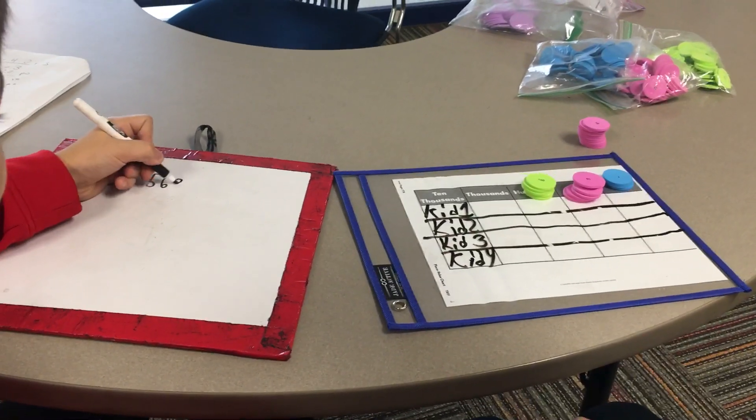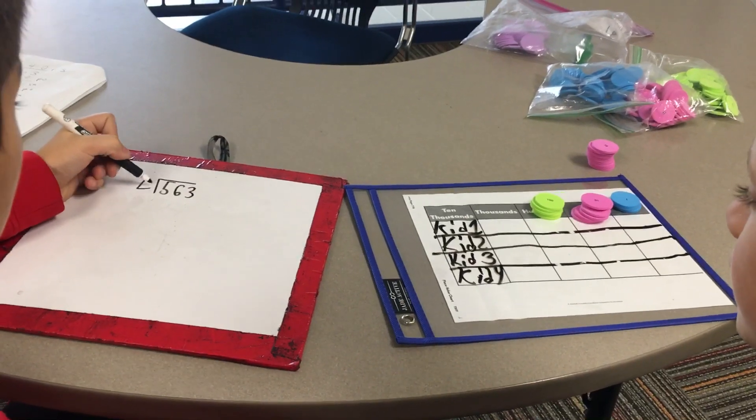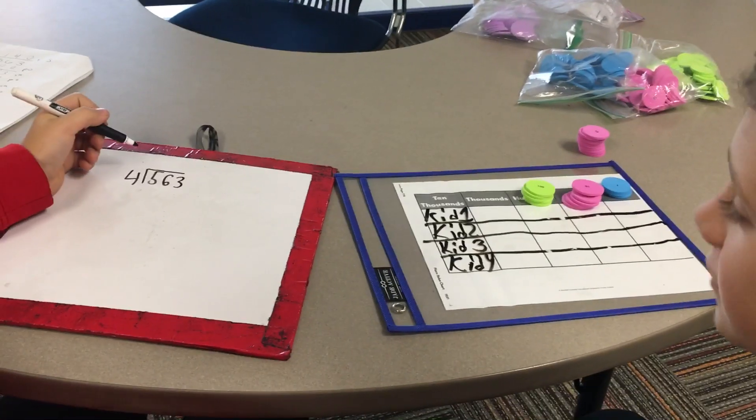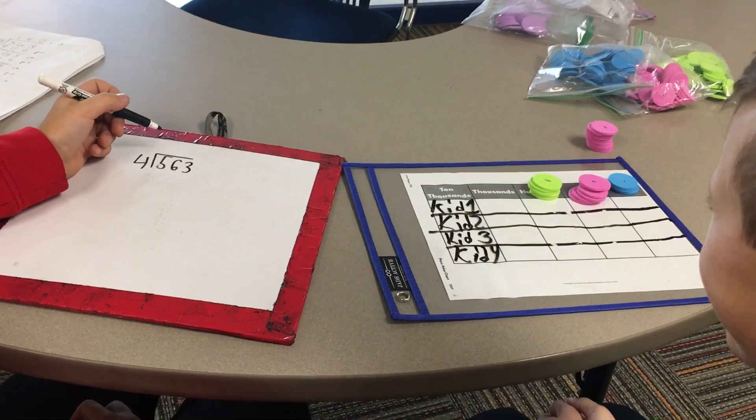There are 563 pieces of candy that need to be divided between four kids. First, you put 563 with chips. There are 500, 6 tens, and 3 ones.